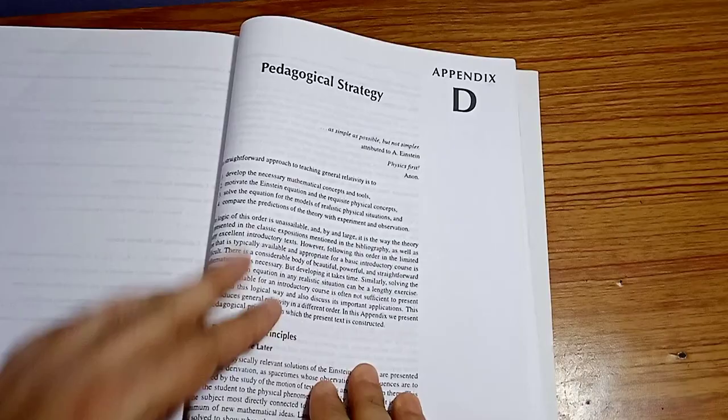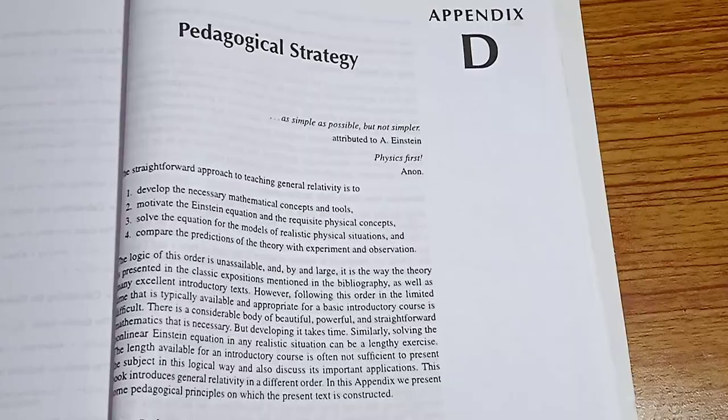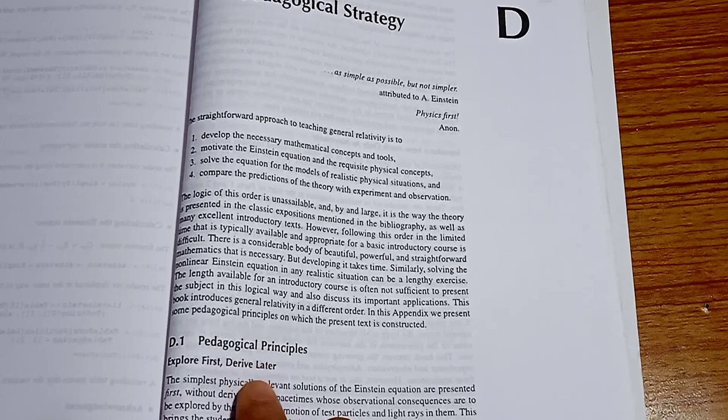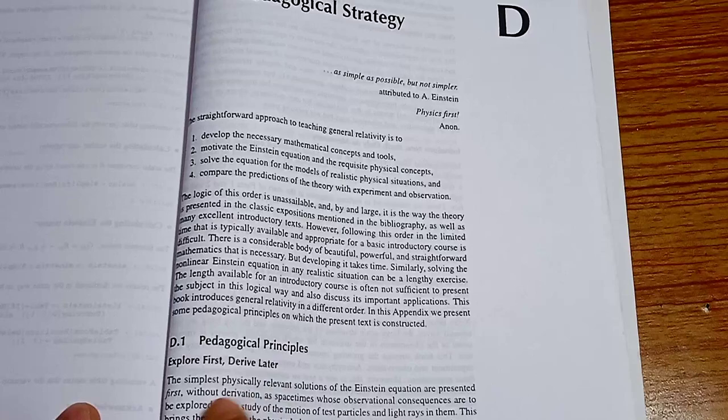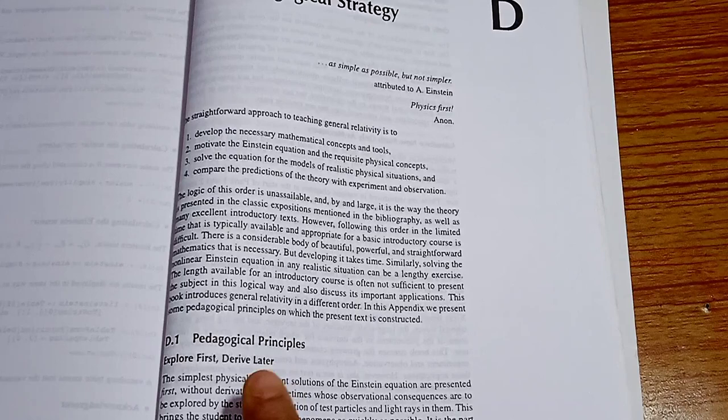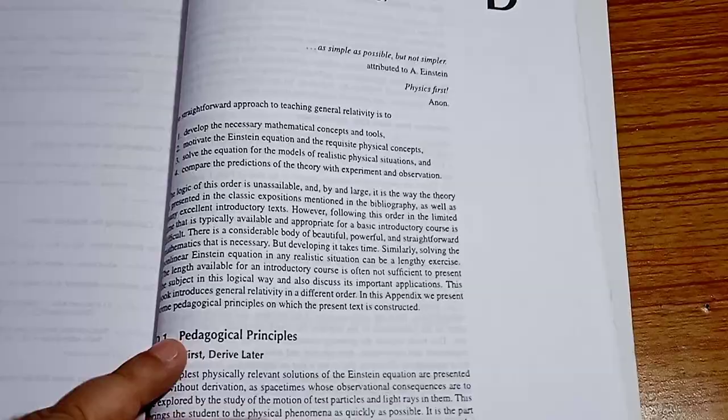Here it shows the pedagogical structure — let me zoom in a little so things become clear. The first thing the book emphasizes is 'explore first and derive later.' This is very important. The author says that the simplest physically relevant solutions of the Einstein equation are presented first without derivation. Most of my videos follow this same principle — explore first, then derive later.